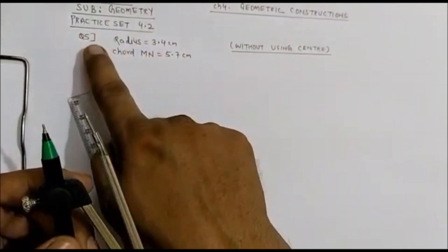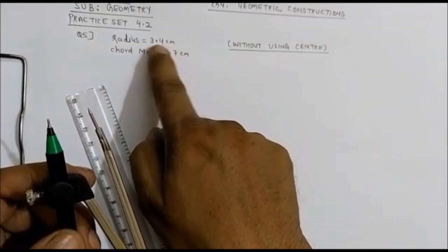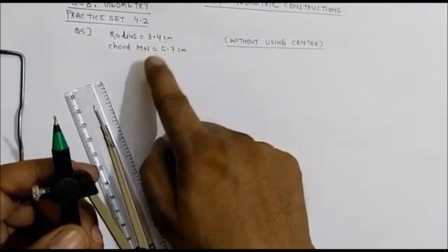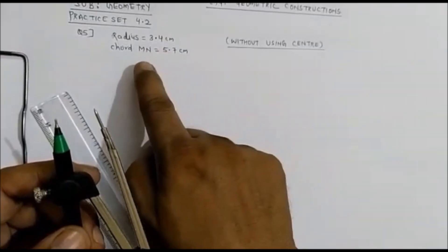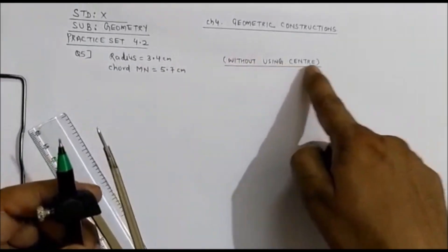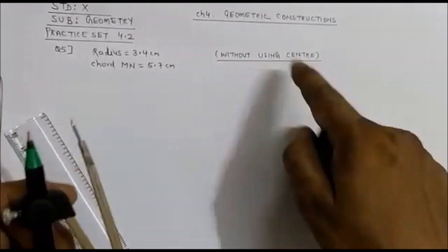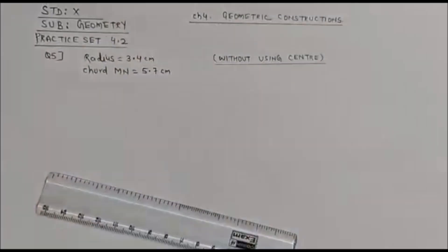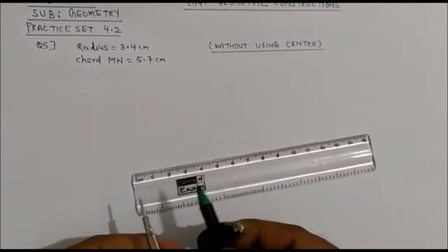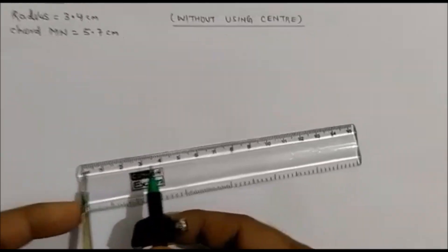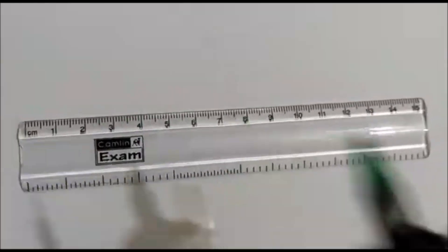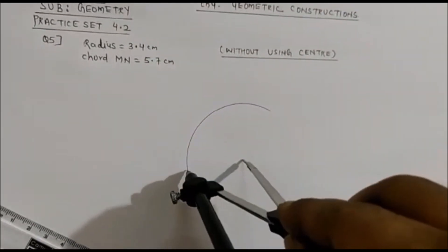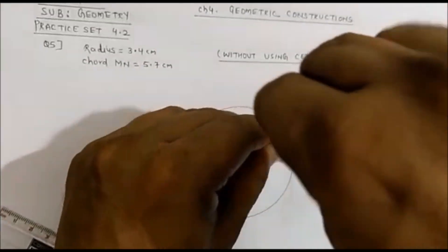Practice Set 4.2, Question 5. The radius is 3.4 cm given. There is a chord MN given as 5.7 cm. We have to draw tangents at points M and N but without using the center of the circle. Let's start. First step: we will draw a circle with radius 3.4 cm. Take the radius 3.4 cm and draw the circle with the given radius.